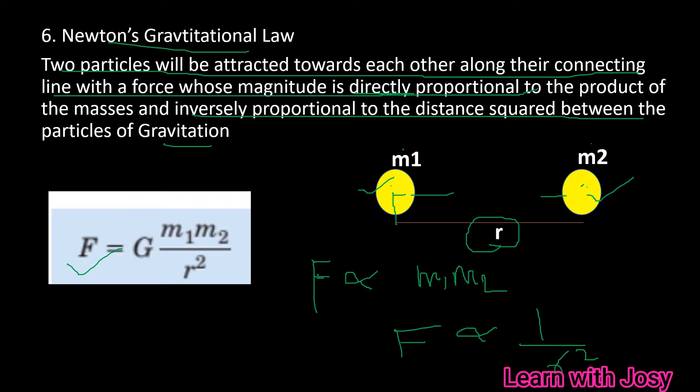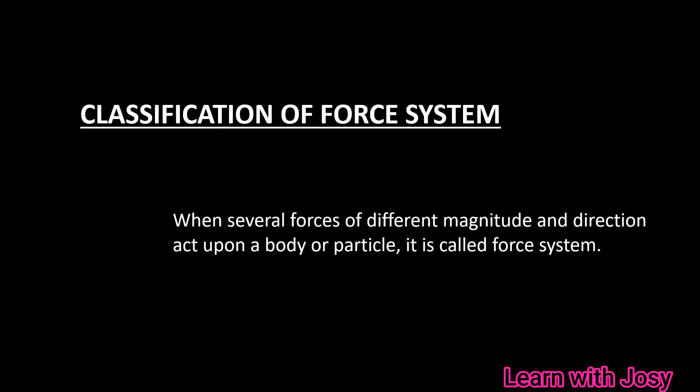The equation for Newton's gravitational law is: F = G × M1 × M2 divided by R squared. Here M1 and M2 are the masses of the two particles, R is the distance between them, and G is the gravitational constant.